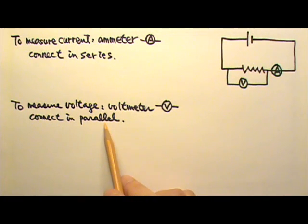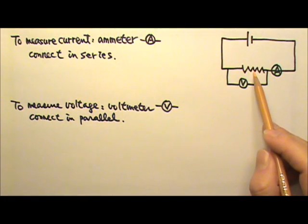We should connect the voltmeter to the resistor in parallel so the voltmeter can get the same voltage as the resistor.